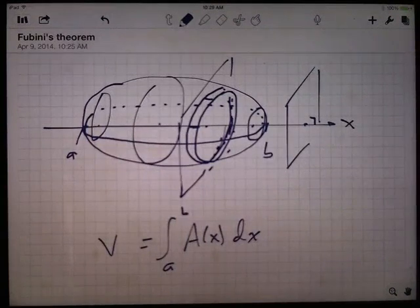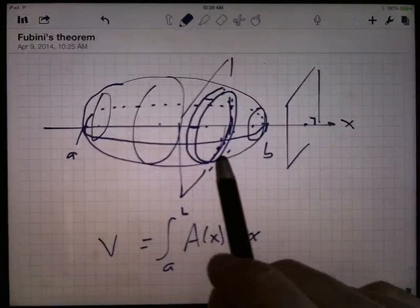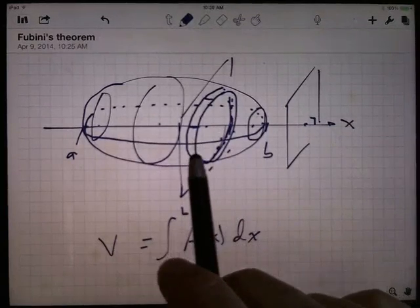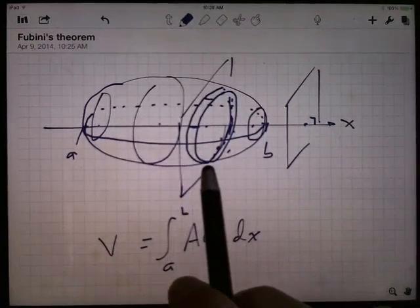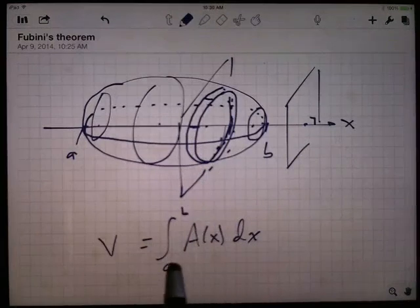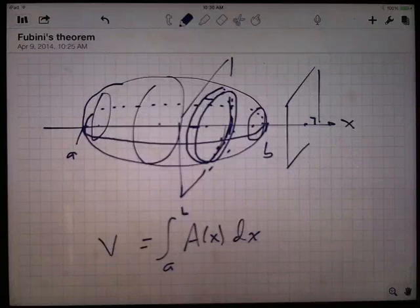And when we did this back in Calc 2, we generally did it in such a way that each slice was recognizable. You could say, all the slices are circles, or all the slices are triangles, or they're all rectangles, that every slice looked like every other one, and we could come up with a formula for the area.